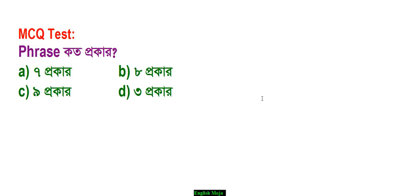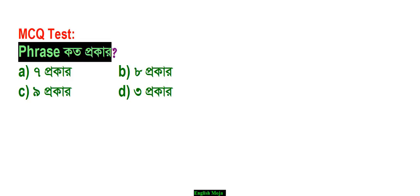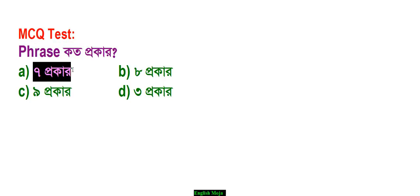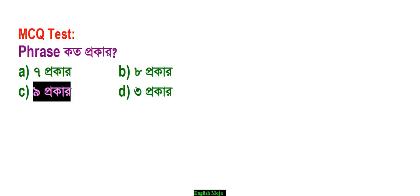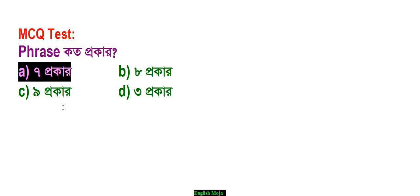MCQ test. I will ask you: phrase katho prokara? Jay bolo dhekhi — phrase katho prokara hote paare? Option A: 7 prokara, Option B: 8 prokara, Option C: 9 prokara, Option D: 3 prokara. Toma guess koro dhekhi — right answer ki hote paare? Ebaar tumra jeta bhebhecho, tara shangya aamara sattik — right answer xe phrase shat prokara. Jara bolte peracho, karno choo.